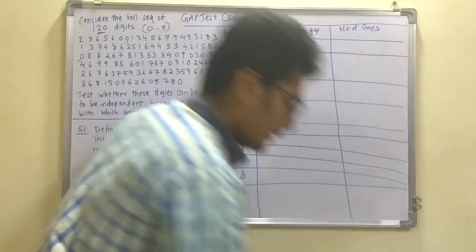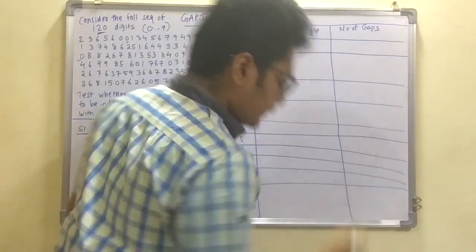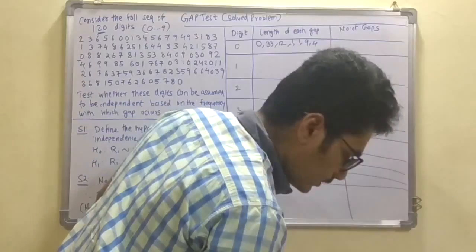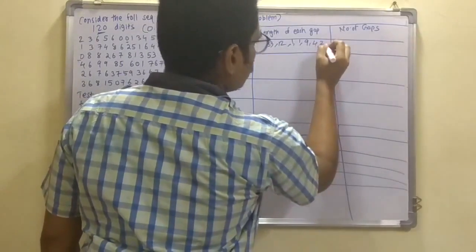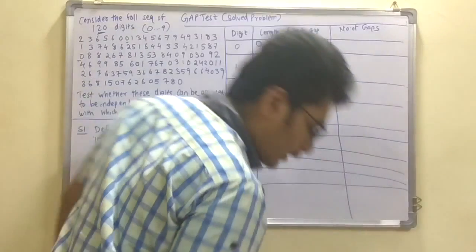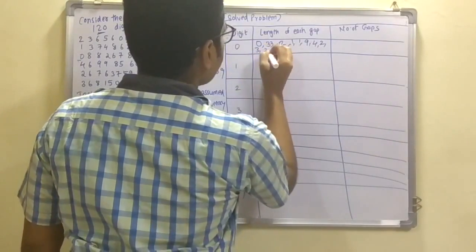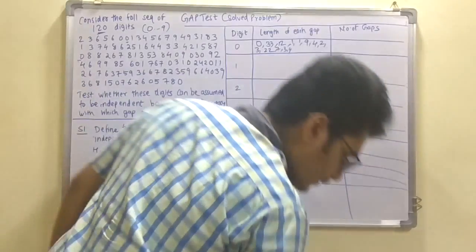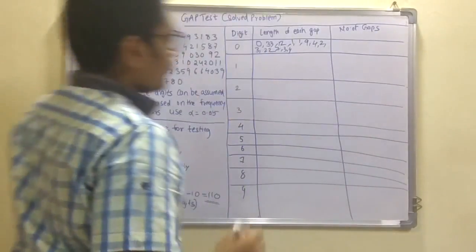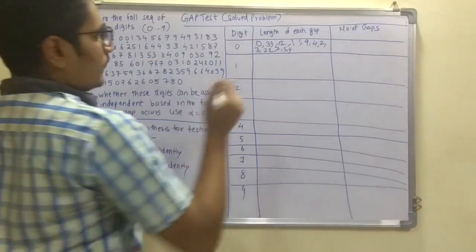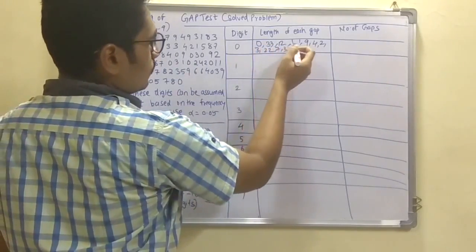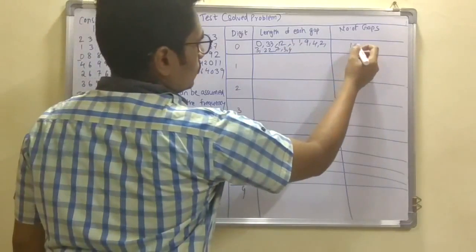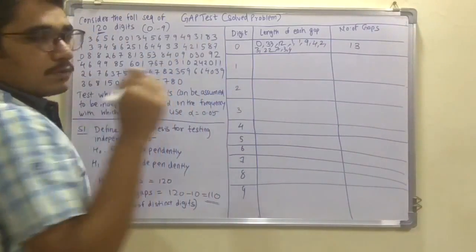The remaining gap lengths for digit 0 are: 12, 1, 1, 9, 4, 2, 2, 9, 4, 2, 3, 22, 7, 3, 4. The total number of gaps for digit 0 is 13.